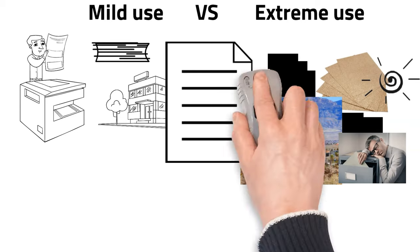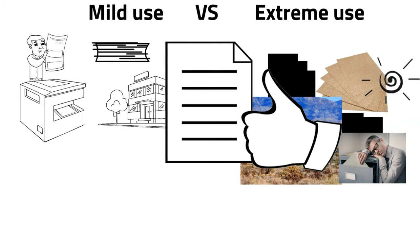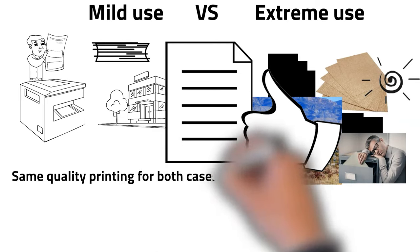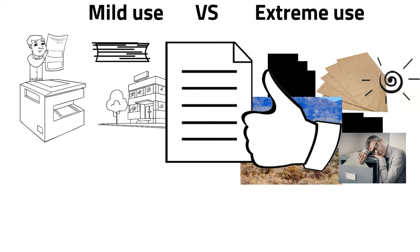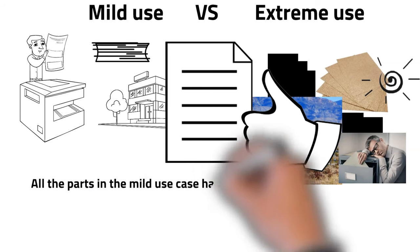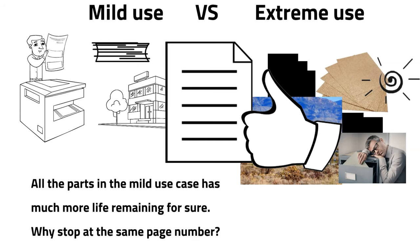Even under extreme conditions, the last page will maintain excellent printing quality. The puzzling aspect is that, in any usage case, the printers will stop at the same page count, regardless of printing conditions or environmental factors. Is the situation matching with the factors affecting the level of wear and tear? Of course not. The parts in mild-use case should have much more usable life remaining, but why are the printers used under mild conditions also stopped at the same page number? Does it ring a bell?